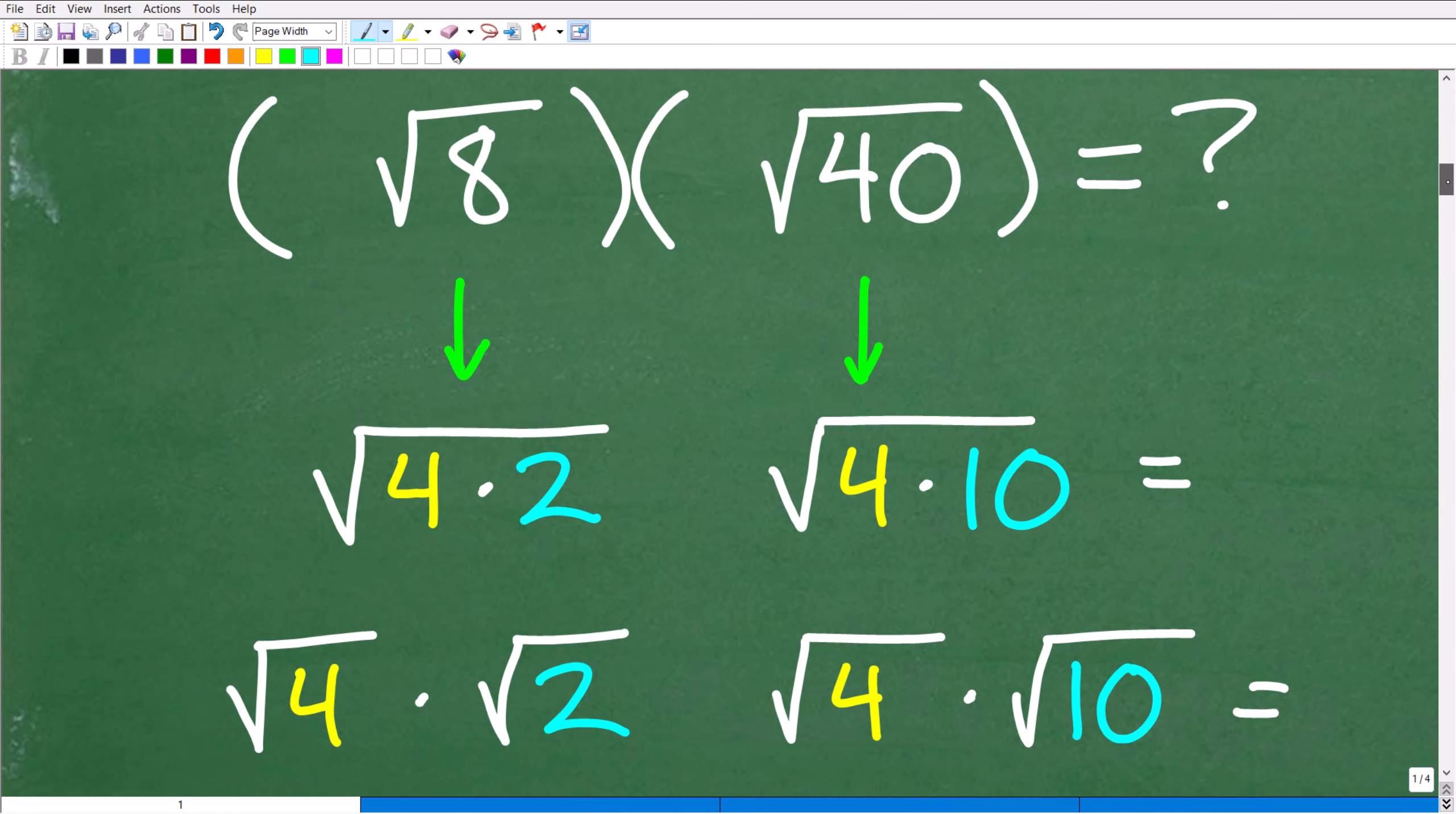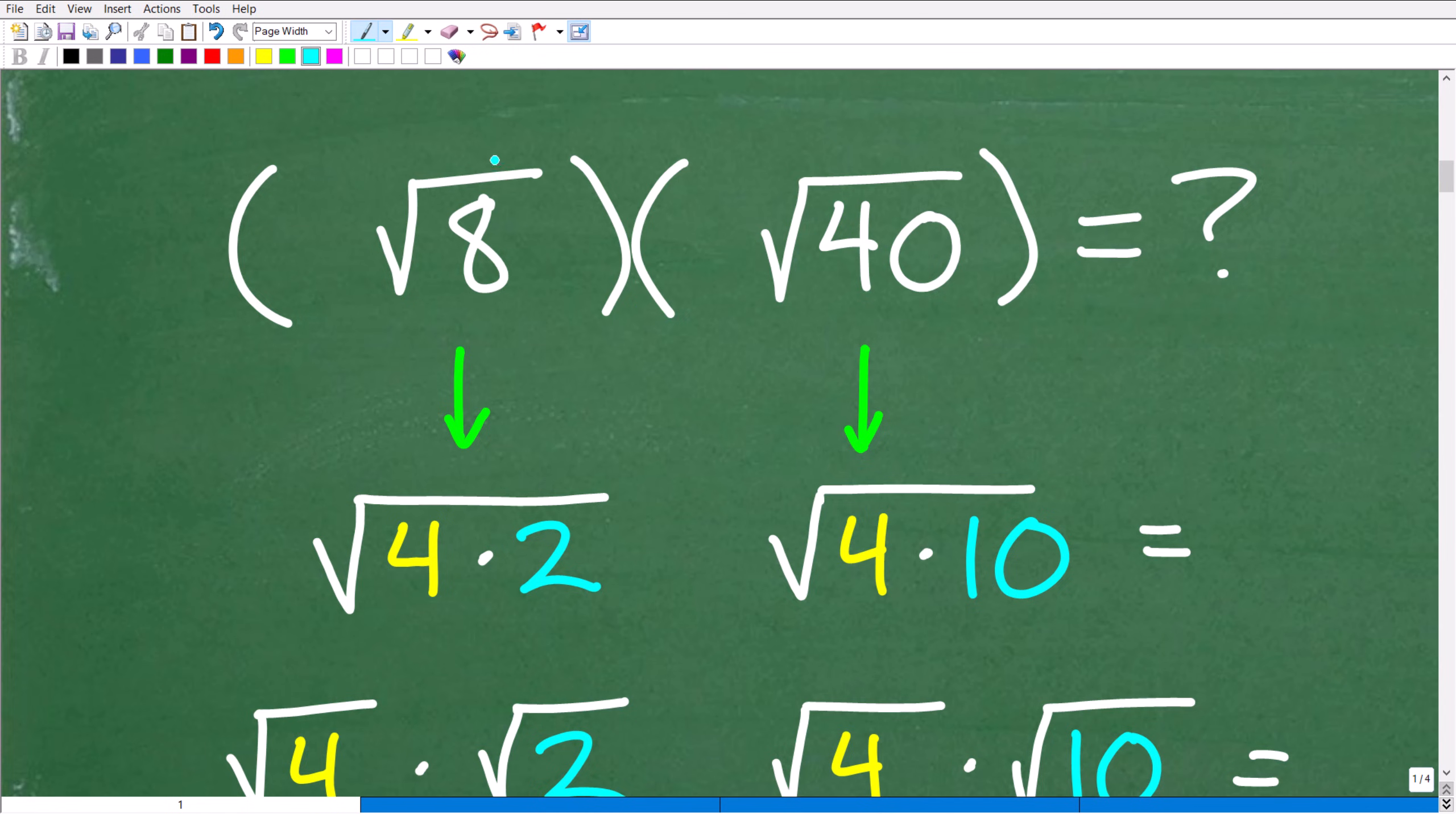All right, now the next thing we need to do is we need to look at each individual numbers underneath these square roots and we need to examine the factors of these numbers. Now, what is a factor of a number? Well, here is 8. The factors of 8 are 4 and 2 and 1 and 8. So these numbers, when you multiply them together, we get back to that number. So we call these numbers factors. So we're looking for very specific factors.